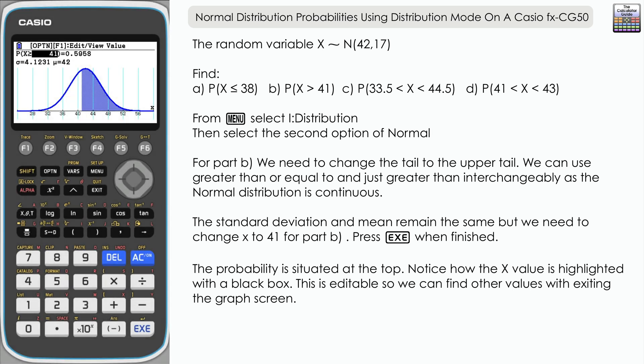Now you may notice that the value of X is highlighted, which means it is editable within this graph part of the distribution feature. We can change that value if we wanted to find other values that X is greater than or equal to. However, we will move on to part C.